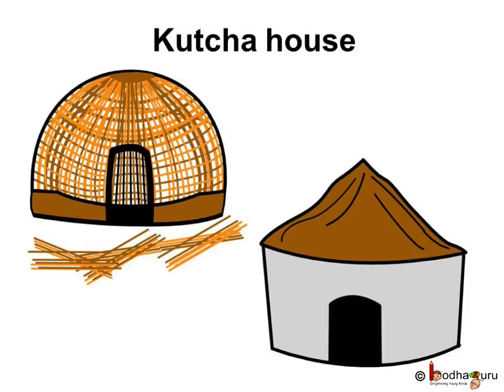Some houses are made up of mud, hay, bamboo, twigs and leaves. This type of house is called a hut or a kaccha house. A kaccha house can be made fast but it is not very strong.